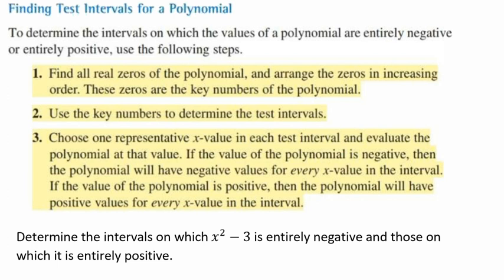We're going to find all the real zeros of the polynomial and arrange the zeros in increasing order. These zeros are our key numbers of the polynomial. Then, we're going to use the key numbers to determine the test intervals.